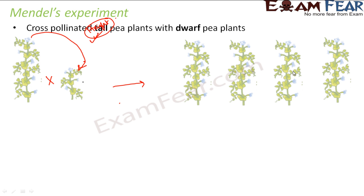This was known as the first generation — the first filial generation, or F1 generation, which is the term used in genetics. What is F1? It means first filial generation. 'Filial' denotes offspring, meaning child. So this was the first child generation, because this was the first time these plants were cross-pollinated and gave birth to children — this was the first filial generation.